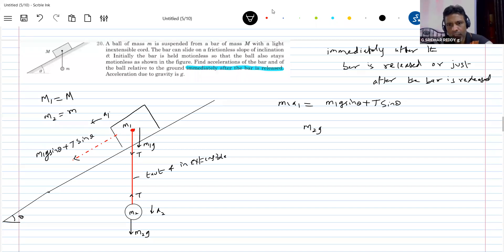Then for the ball, M2G minus T equal to M2 A2. How many unknowns are there? A1, A2 and T. I need one more equation.